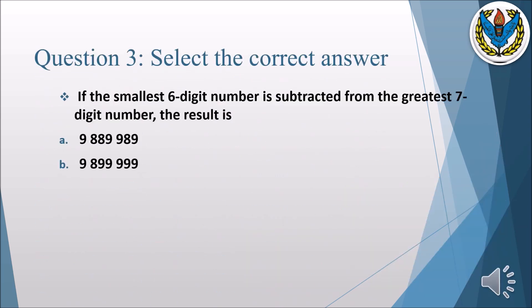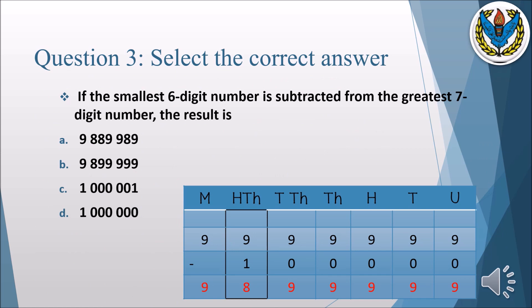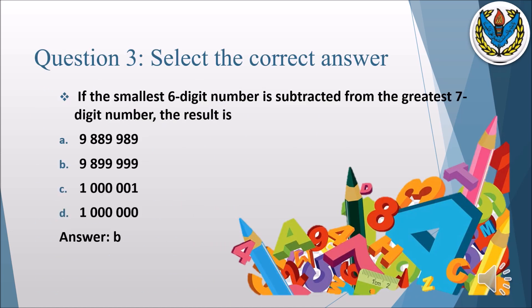67,824,729 plus 324,216 equals 68,148,945, so the correct option is A. Finally, if the smallest 6-digit number is subtracted from the greatest 7-digit number, the result is 9,899,999, so the correct option is B.